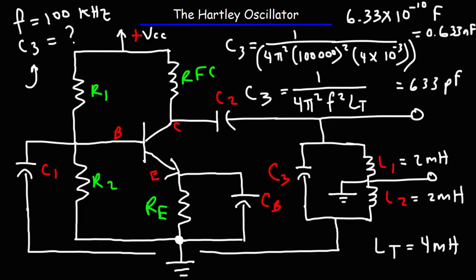So that's the value of C3 that you need in order to obtain an oscillation at 100 kilohertz, theoretically speaking.